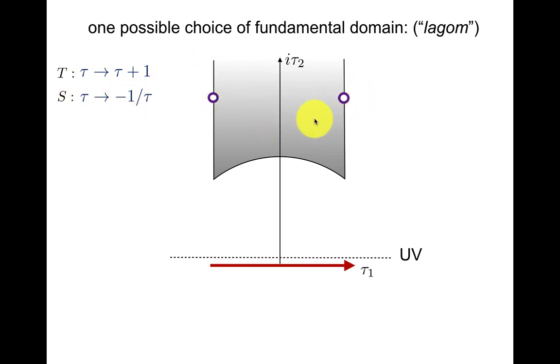And under this transformation, this region here is mapped to this region here. And in fact, the definition of a fundamental domain is like the word lagom in Swedish. This means just enough. That means that every value of tau is covered exactly once by using just this fundamental region here.